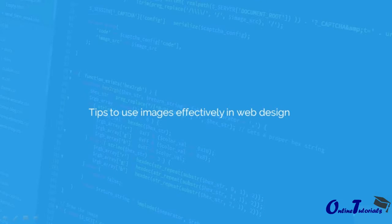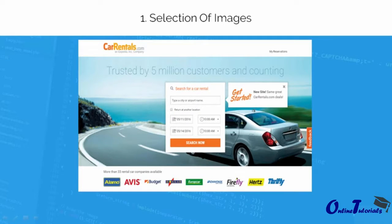Let us discuss some guidelines while choosing images for a website. The first one is to choose a relevant image for your business website. If you are in the rent-a-car business, obviously images related to that business should be picked. You need to know your niche and select the images accordingly.